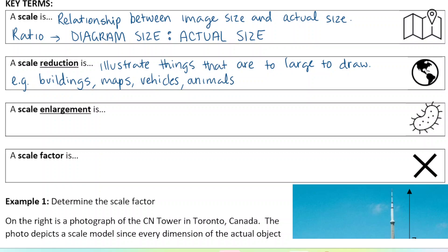It wouldn't make sense to draw a picture of an elephant, for example, at its regular size. It would be way too big to draw. So we draw a smaller scale reduction of that.